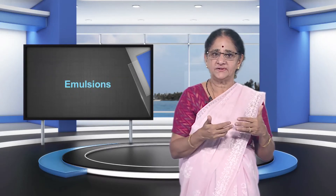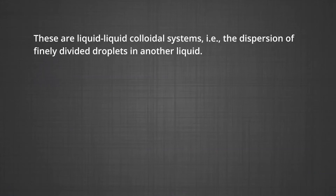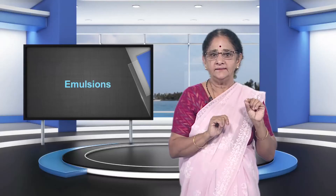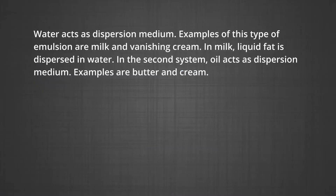Now let us see what we mean by emulsions. These are liquid-liquid colloidal systems, that is the dispersion of finely divided droplets in another liquid. If a mixture of two immiscible or partially miscible liquids is shaken, a coarse dispersion of one liquid in the other is obtained, which is called an emulsion. Generally, one of the two liquids is water. There are two types of emulsions: number one, oil dispersed in water, known as O/W type; and number two, water dispersed in oil, called W/O type, as depicted in the figure. In the first system, water acts as dispersion medium; examples are milk and vanishing cream. In milk, liquid fat is dispersed in water. In the second system, oil acts as dispersion medium; common examples are butter and cream.